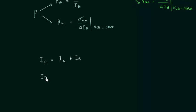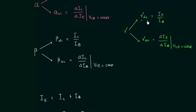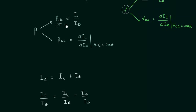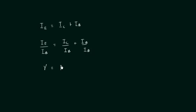So we have IE divided by IB equal to IC divided by IB plus IB divided by IB. IE divided by IB is equal to gamma DC, or we can simply consider gamma. IC divided by IB is equal to beta DC, or we can simply consider beta. IB divided by IB is equal to 1.